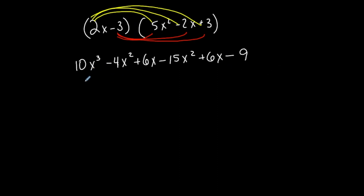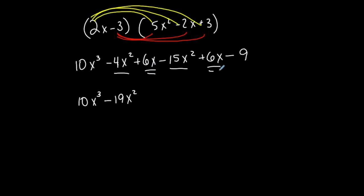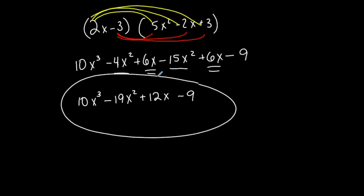Now combine like terms and put everything in standard form. 10x³ is first since it has the highest exponent. The x² terms: −4 plus −15 is −19x². The x terms: 6x plus 6x is 12x. And then minus 9 is the constant. Remember, when adding like terms you maintain the variable — you only add exponents when multiplying. Final product: 10x³ − 19x² + 12x − 9.